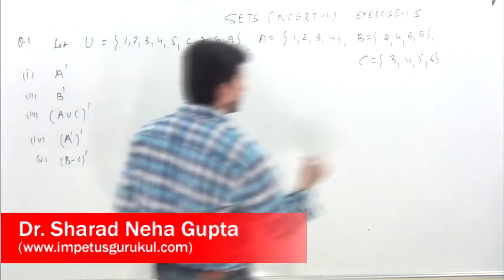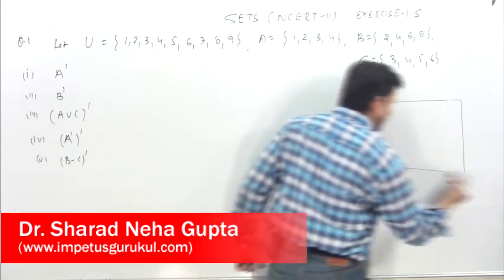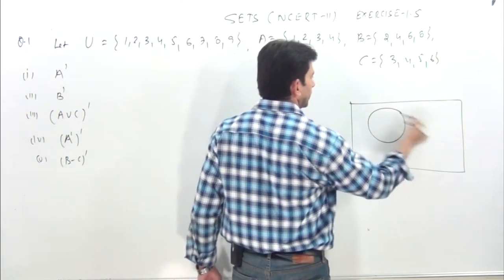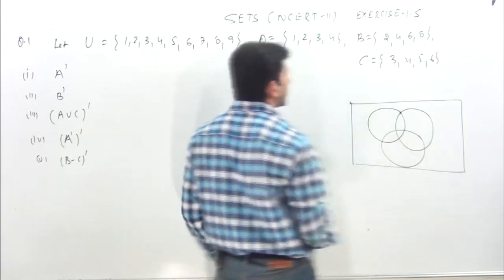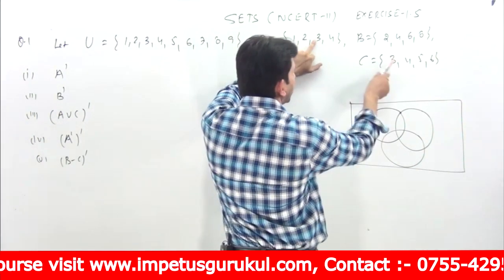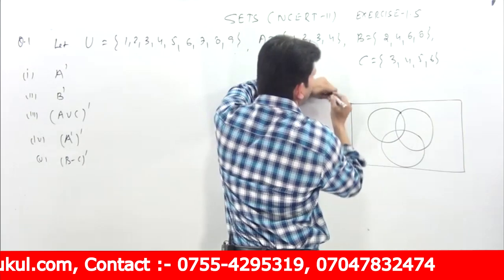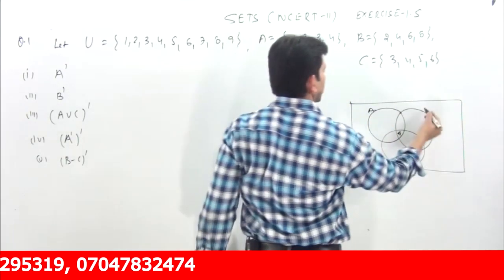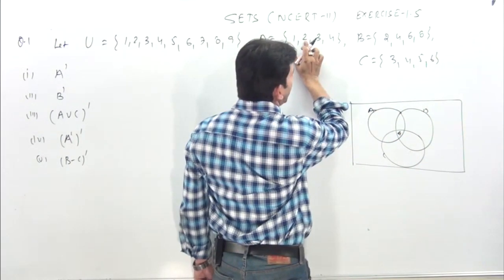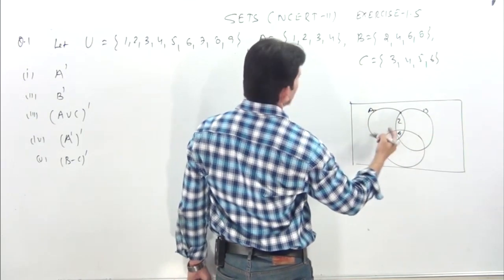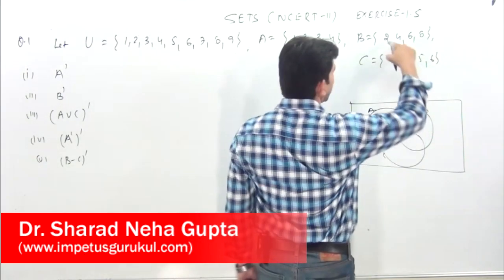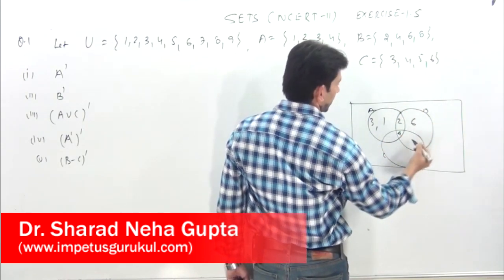Chaliye exercise ka first question karte hain. Universal set diya hai {1, 2, 3, ..., 9}. Complement ka concept universal set ke saath hamesha banega. Universal set ko normally rectangle box mein likhte hain. Ab A, B, and C diya hai. A, B, C mein common elements dekhiye: 3 yahan bhi hai, 4 sabse common hain. A aur B mein common hai 1, 2 and 2.